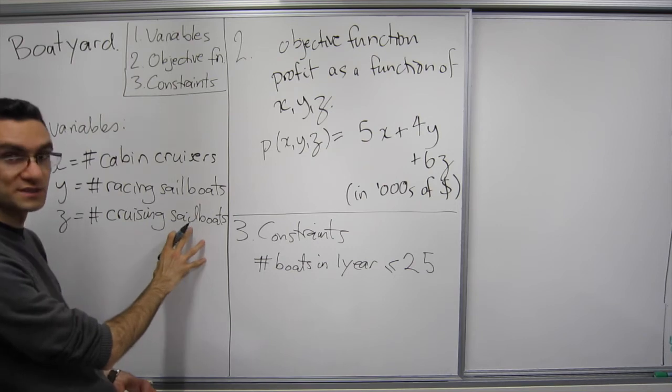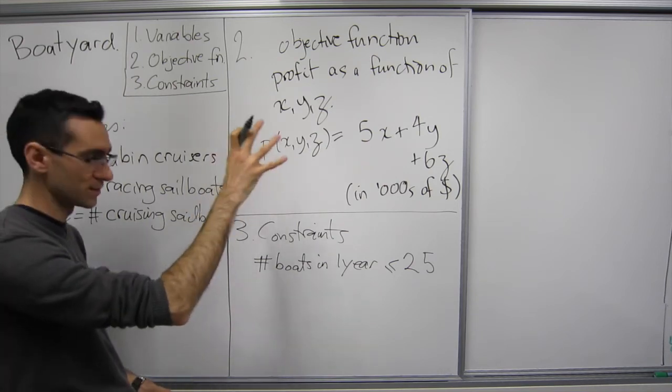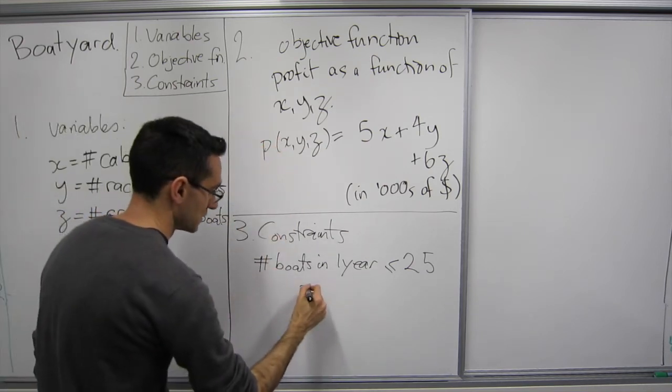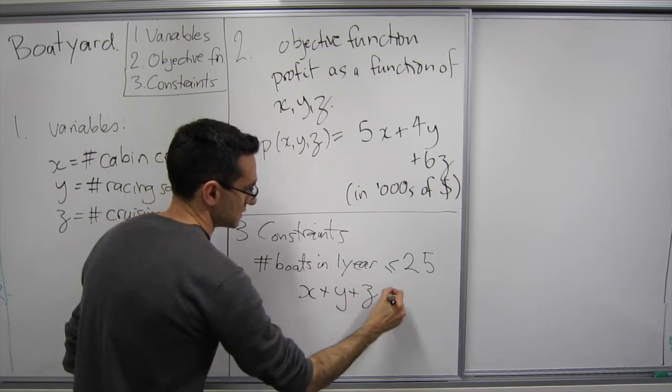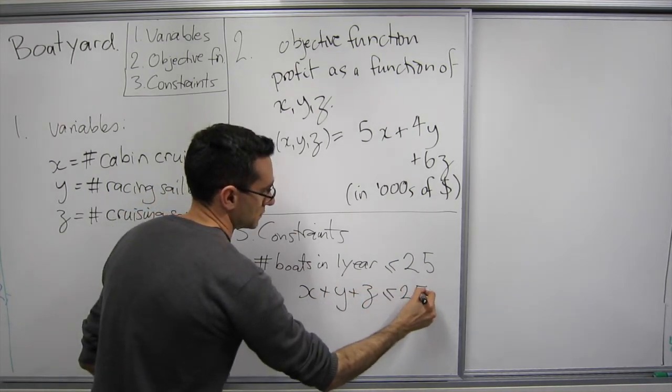But the number of boats in one year is going to be the number of cabin cruisers plus the number of racing sailboats, which is just X plus Y plus Z. So we have X plus Y plus Z is less than or equal to 25.